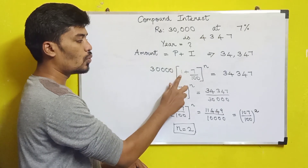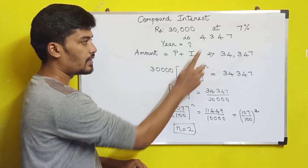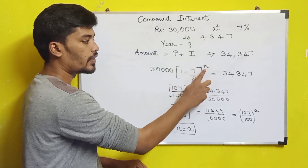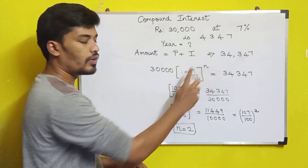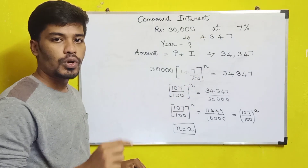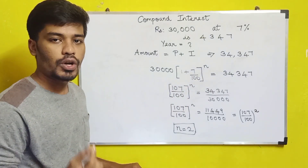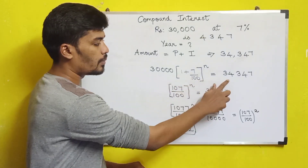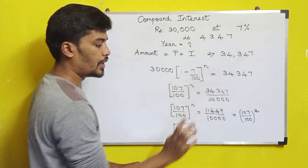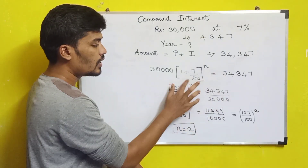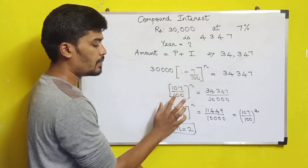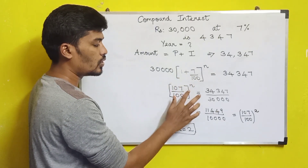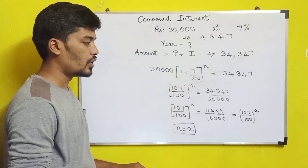Our principal is 30,000 into (1 + r/100)^n, where n is the number of years we want to find. We take 107 divided by 100 to the power n.